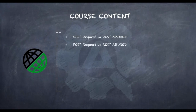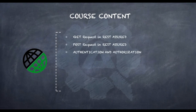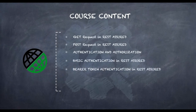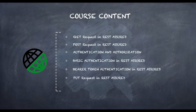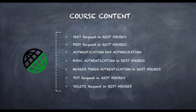Following GET and POST requests, we have authentication and authorization, which are used to confirm the identity of the person and give authorized access. We'll cover basic authentication as well as bearer token authentication in Rest Assured. Next is the PUT request, used to update resources on the server, followed by the DELETE request, which is used to delete resources located on the server.